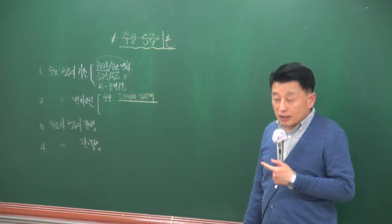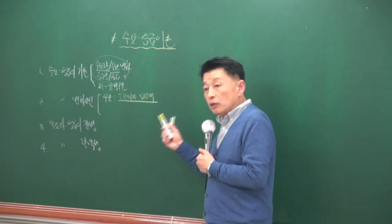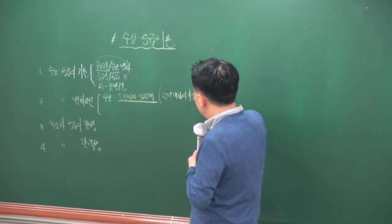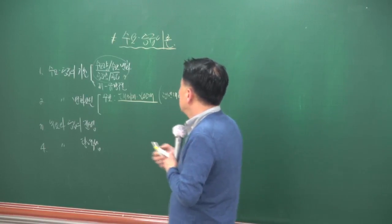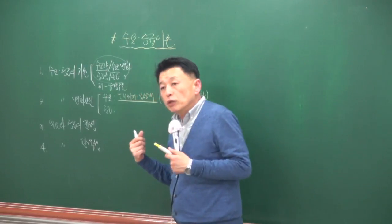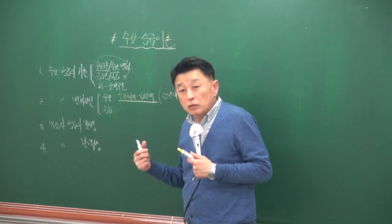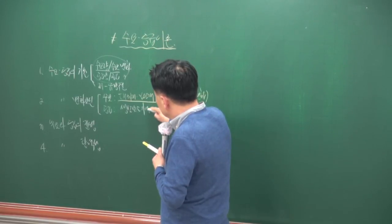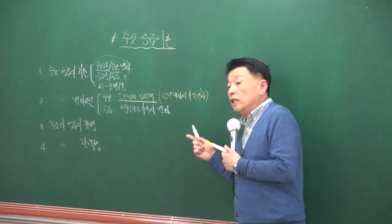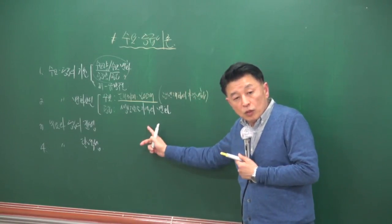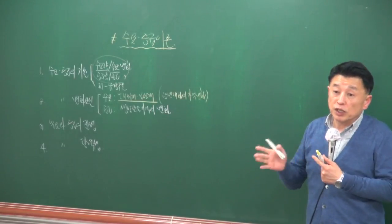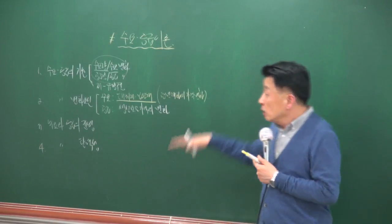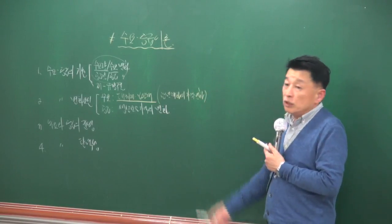수요 변화 요인 중 가장 중요한 것은 관련재의 가격 변화입니다. 공급 측에서는 생산요소 가격의 변화가 가장 중요합니다. 예를 들어 건설 노동자의 임금이나 시멘트 가격 같은 것들이 생산요소 가격에 해당하며, 지문에서 이를 구별하는 문제가 출제됩니다.